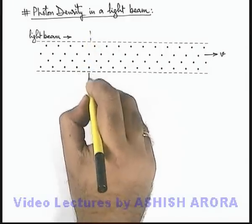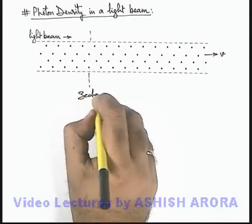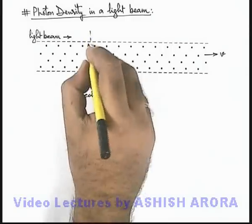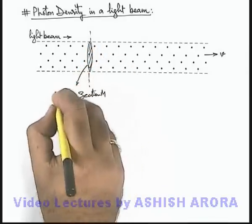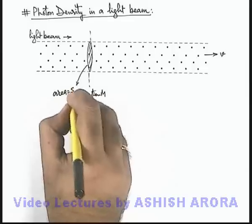Now in this situation, if we consider a section M of this light beam, then the cross-sectional area of this light beam is, say, this area is equal to S.